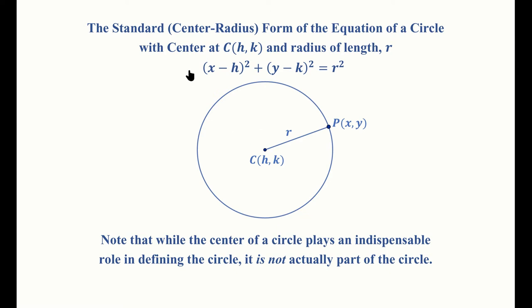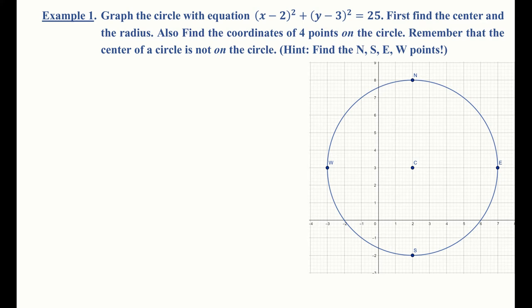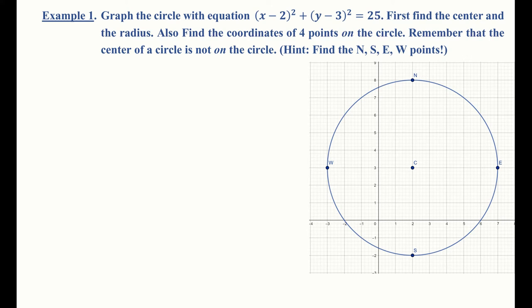Let's put the standard form to use. We're going to graph the circle with equation (x minus 2)² plus (y minus 3)² equals 25. First we'll find the center and the radius, and we'll also find the coordinates of four points — the east, west, north, and south points — which help us graph the circle easily by hand. We'll compare the given equation to the standard form.